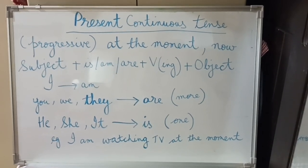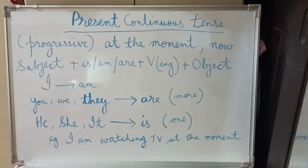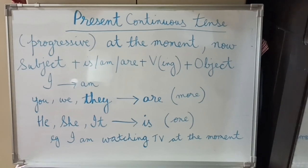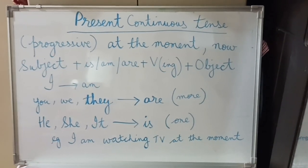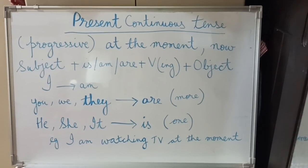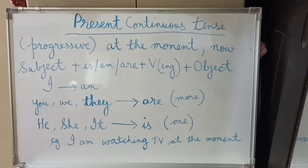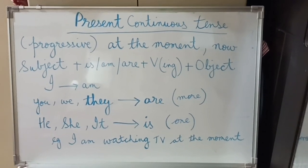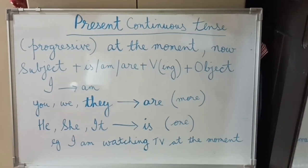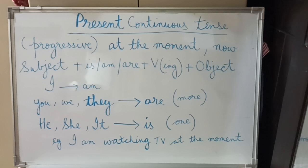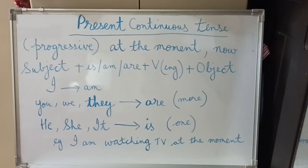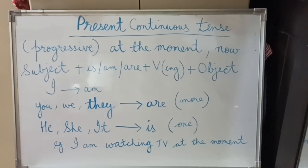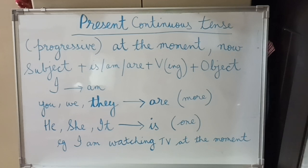Because we are using the signal word as well, we will not say that 'TV at the moment' is the object. We will call it an object phrase or noun phrase — this whole group of words is a phrase. Subject phrases and object phrases are called noun phrases, and I will explain that in another lesson.